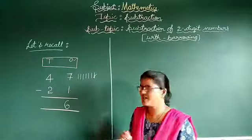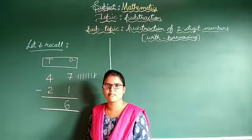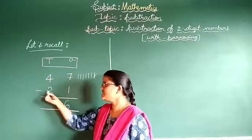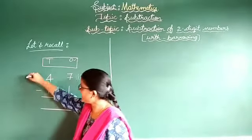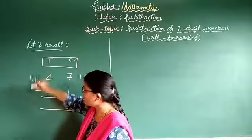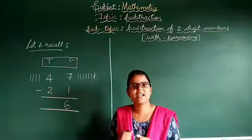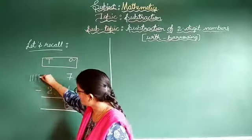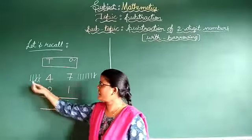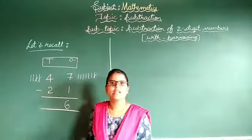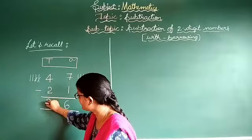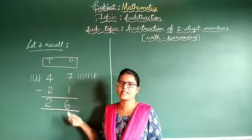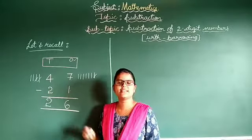Next, calculate the tens place: 4 minus 2. Draw 4 lines — 1, 2, 3, 4. Strike out 2 lines: 1 and 2. How many lines are remaining? 1 and 2 — left with 2 lines. Write down 2. The difference of 47 minus 21 is 26.